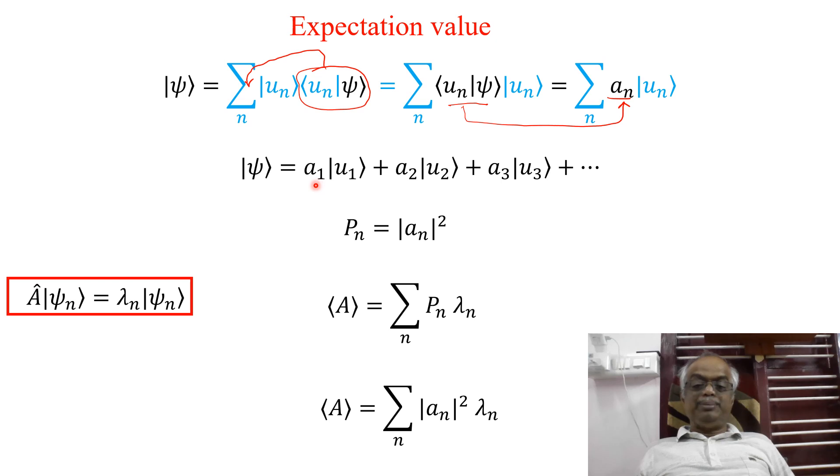Now this expansion coefficient or probability amplitude, if you square this, if you take modulus square, because you know the expansion coefficient is maybe a complex number or a real number, so we are taking modulus of AN square. So now the expectation value is equal to the probability multiplied by this corresponding eigenvalue. Of course you have summed up all N. So like your regular experiment, you are taking summation over the product of probability with this eigenvalue lambda N. So Pn lambda N.